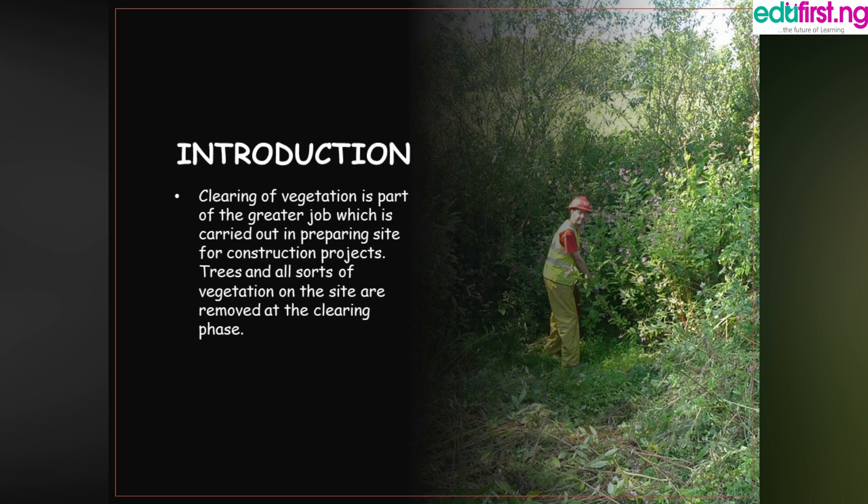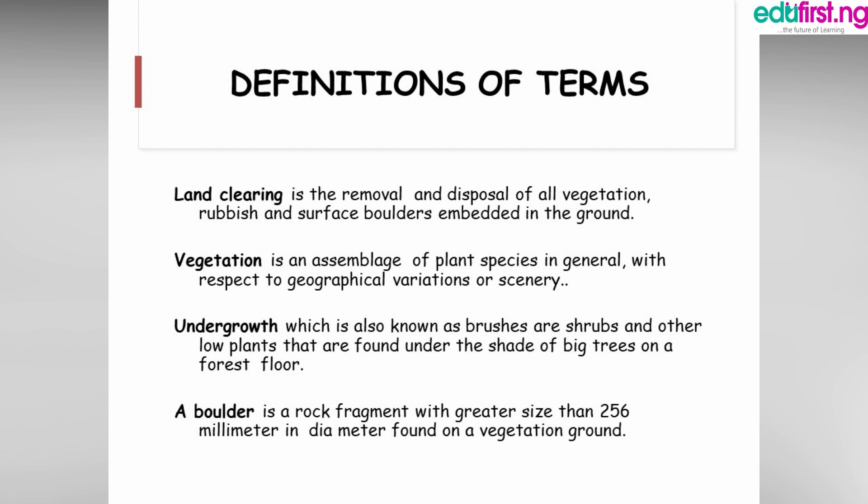Learners should also be able to say at least three factors of consideration before vegetation clearing and explain at least two methods of clearing vegetation. Introduction: clearing of vegetation is part of the greater job carried out in preparing a site for construction projects. Trees and all sorts of vegetation on the site are removed at the clearing phase. Land clearing is the removal and disposal of all vegetation, rubbish, and surface boulders embedded in the ground. Vegetation is an assemblage of plant species in general with respect to geographical variation or scenery.